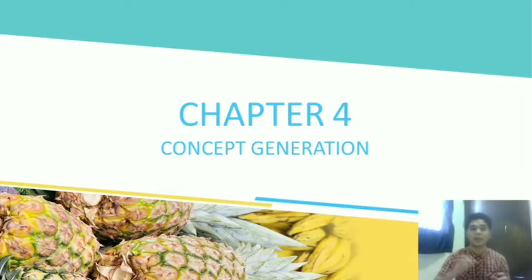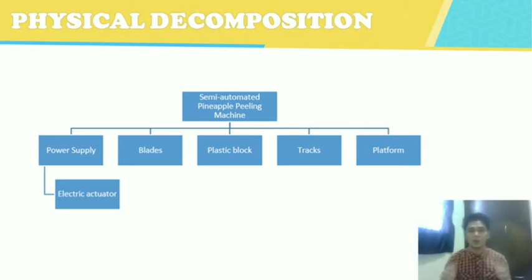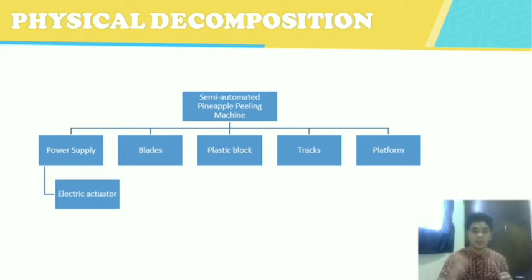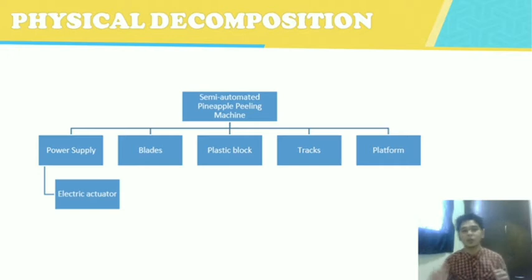Next we continue with Chapter 4, which is concept generation. This is our physical decomposition. For our product, we have five main components: power supply, blades, plastic block, threads, and platform. Under power supply, we have an electric actuator.